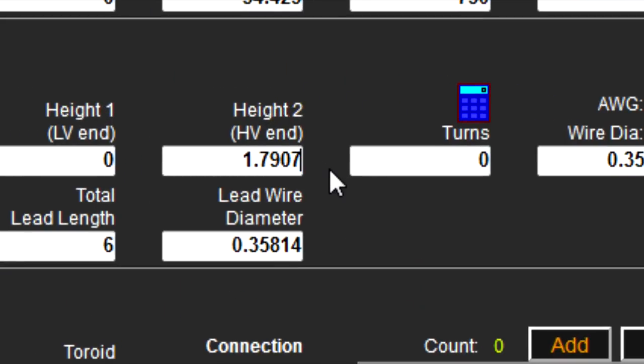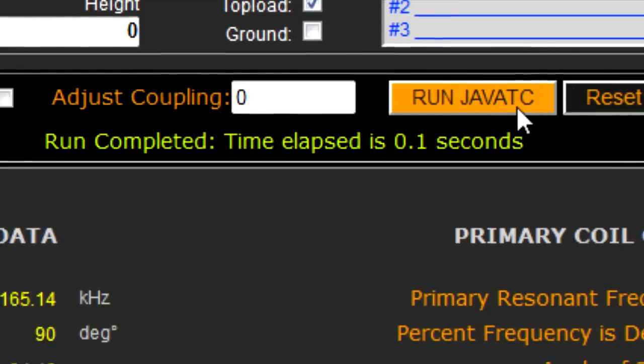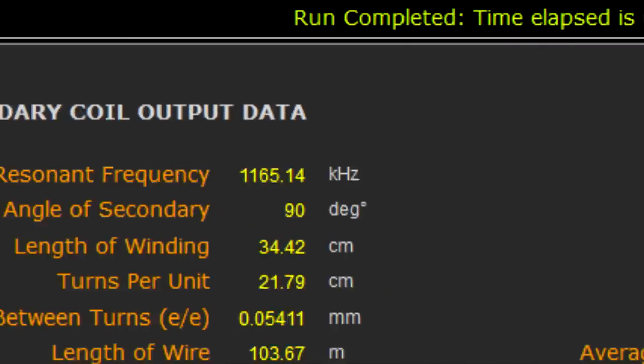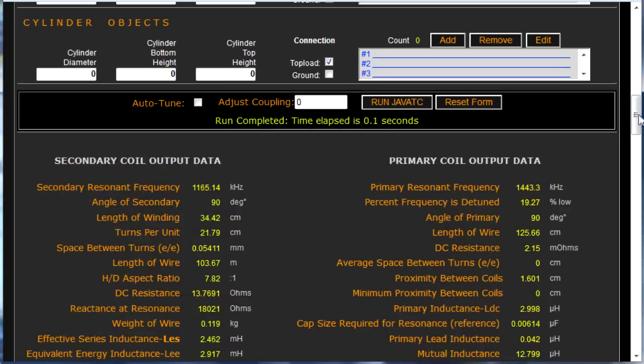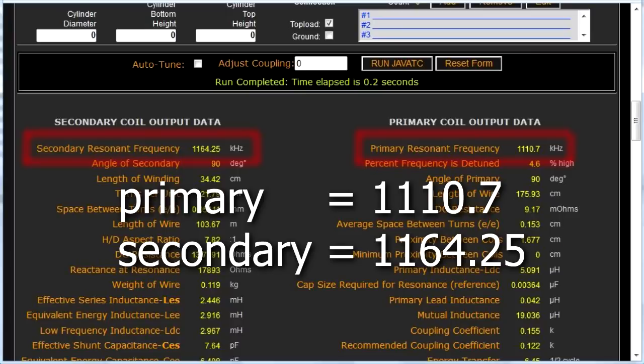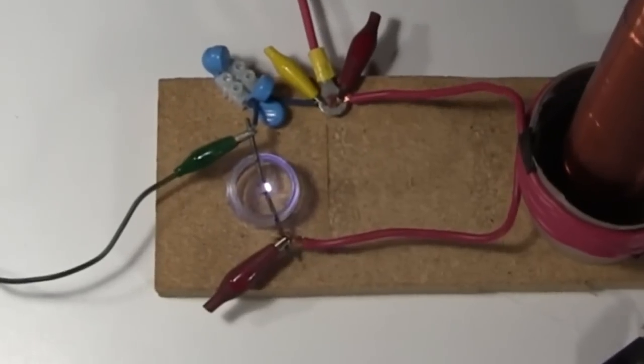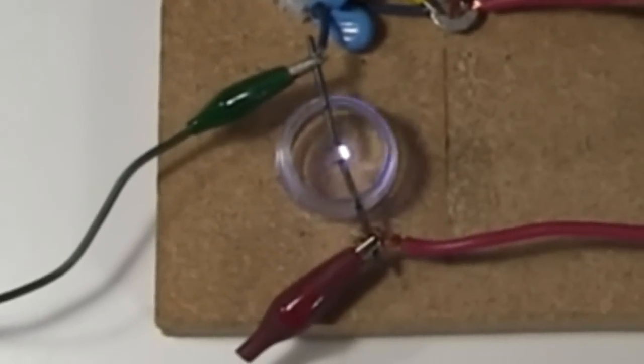Doing these calculations is an iterative process. You try some values for what you think you can make, then click on the Run Java TC button to see if you get frequencies that are close together. If they're not, then you try new values, and keep doing that until you come up with something you can make. I try to get a primary resonant frequency that is a little less, at most 10% less, than the secondary resonant frequency. That's a rule of thumb that's intended to account for the fact that the spark gap will heat up over time, affecting the actual frequency.